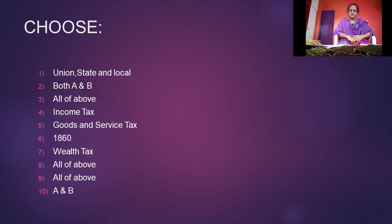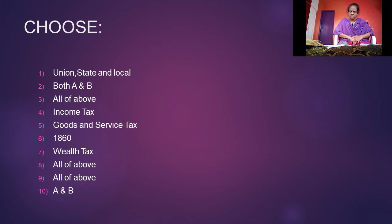Choose the correct answer. The three levels of governments in India are union, state and local. In India, taxes include direct tax and indirect taxes. The role of government in development policies includes defense, foreign policy, regulate the economy — answer is all of the above.